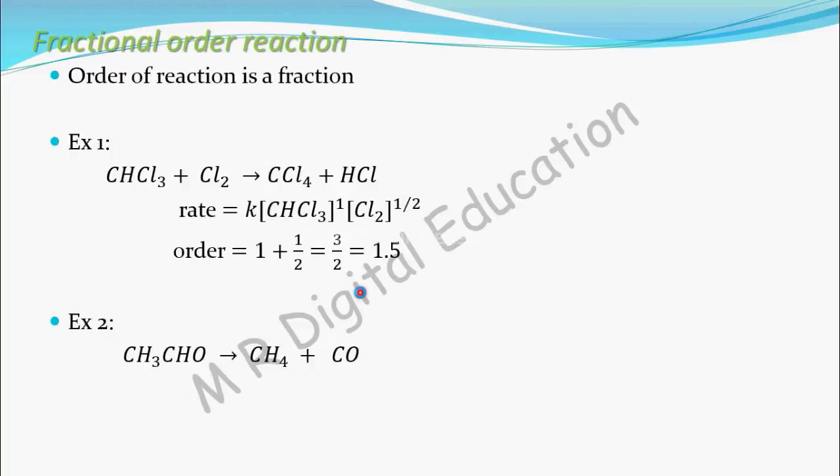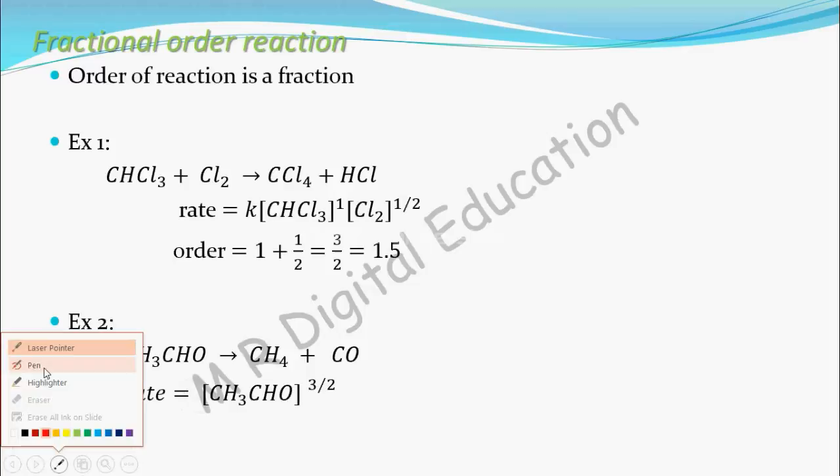See, one more example. CH3CHO gives CH4 plus CO. For this reaction also, we can write rate as, rate equal to—see, K is missing here. So, take this K. So, K into concentration of the reactant, that is CH3CHO to the power 3 by 2.